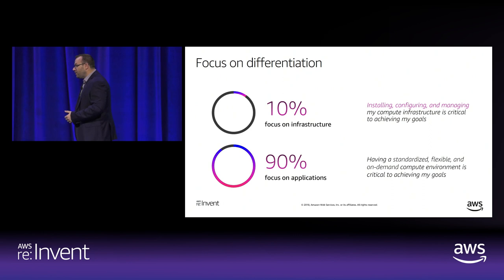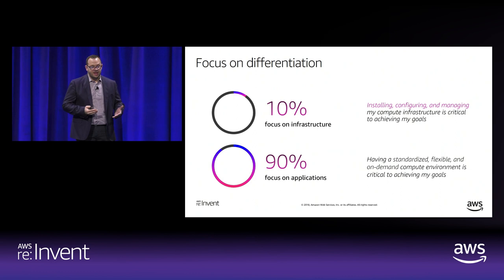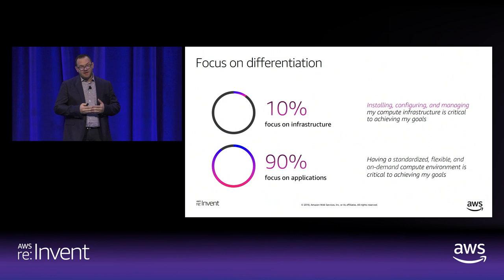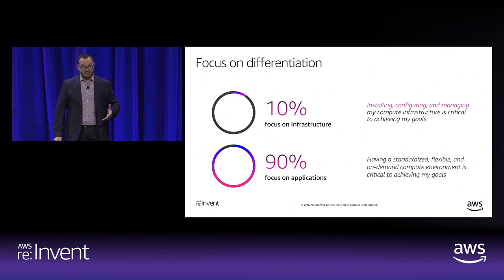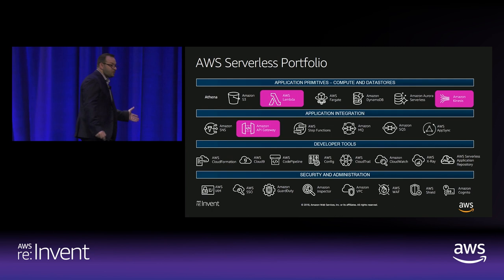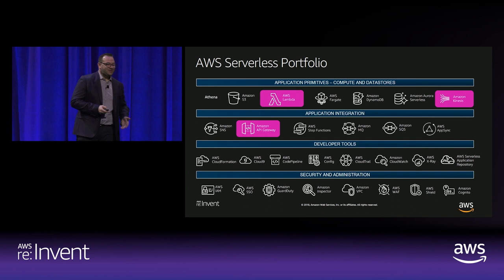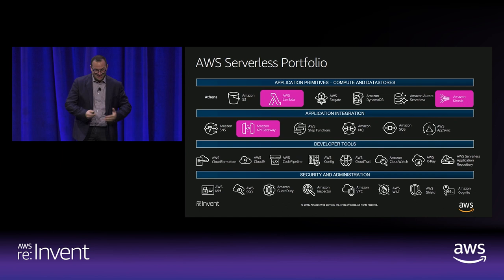As a result, you as an engineer, DevOps, or architect are shifting your focus to about ten percent on infrastructure and ninety percent on building the business logic you need for your stack — whether for analytics workloads or application development. If you look at the AWS serverless portfolio today, in this session we're going to focus on two or three services: AWS Lambda, Amazon Kinesis, and API Gateway.